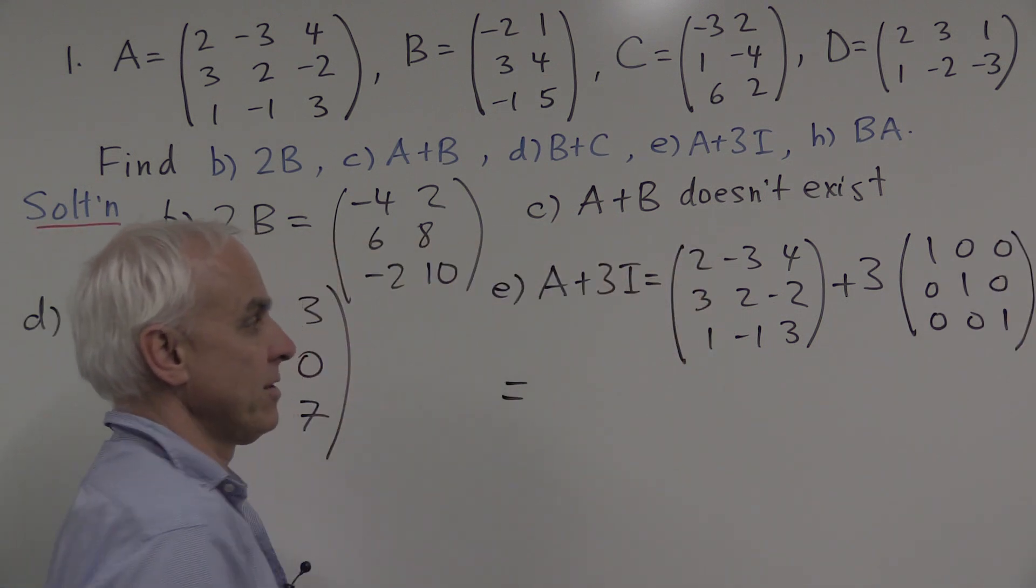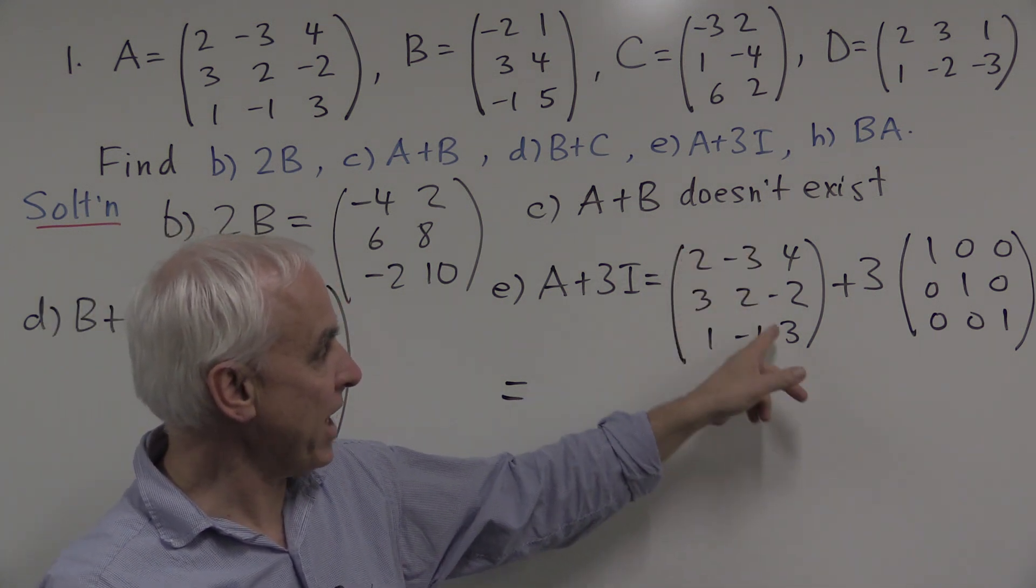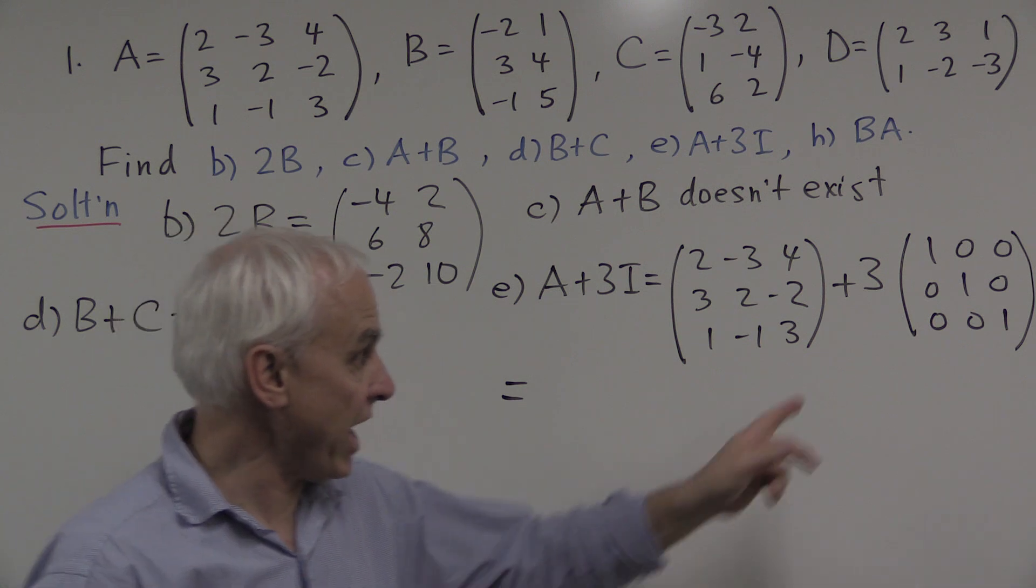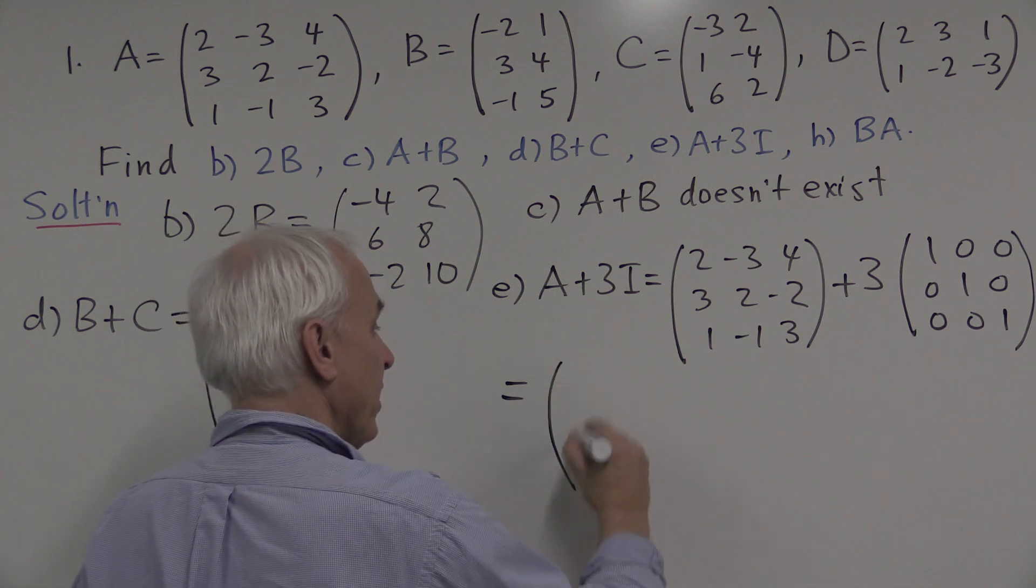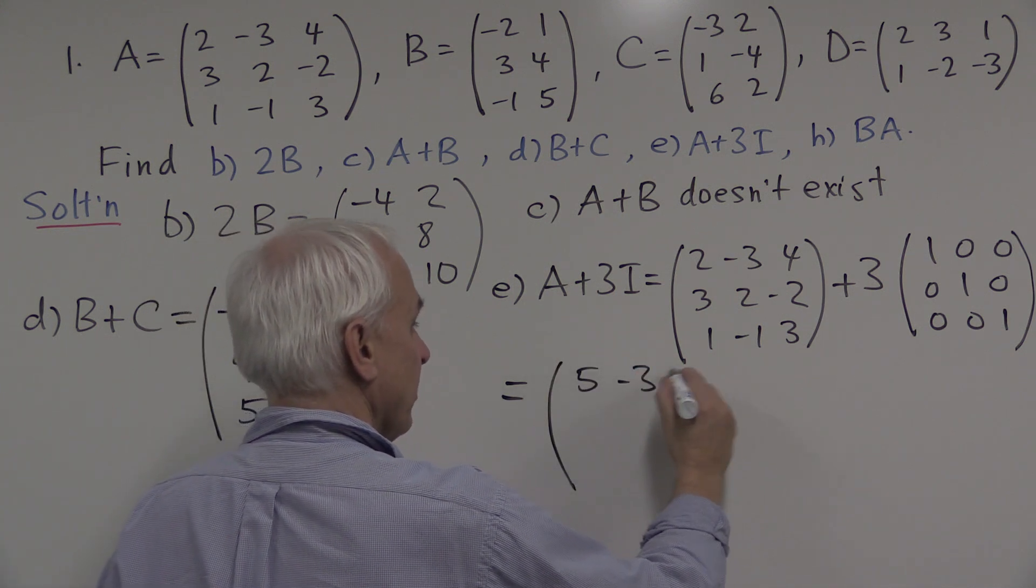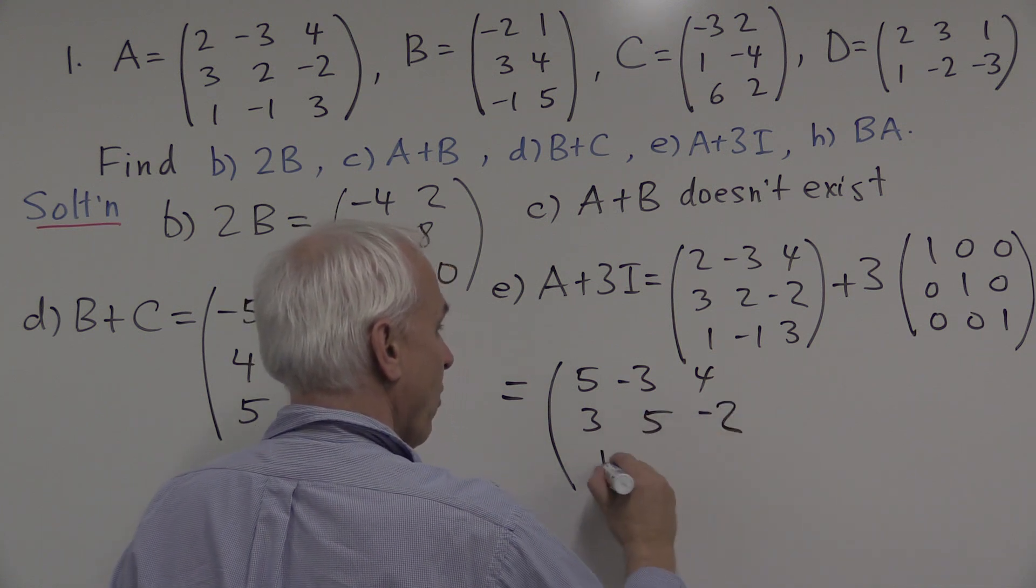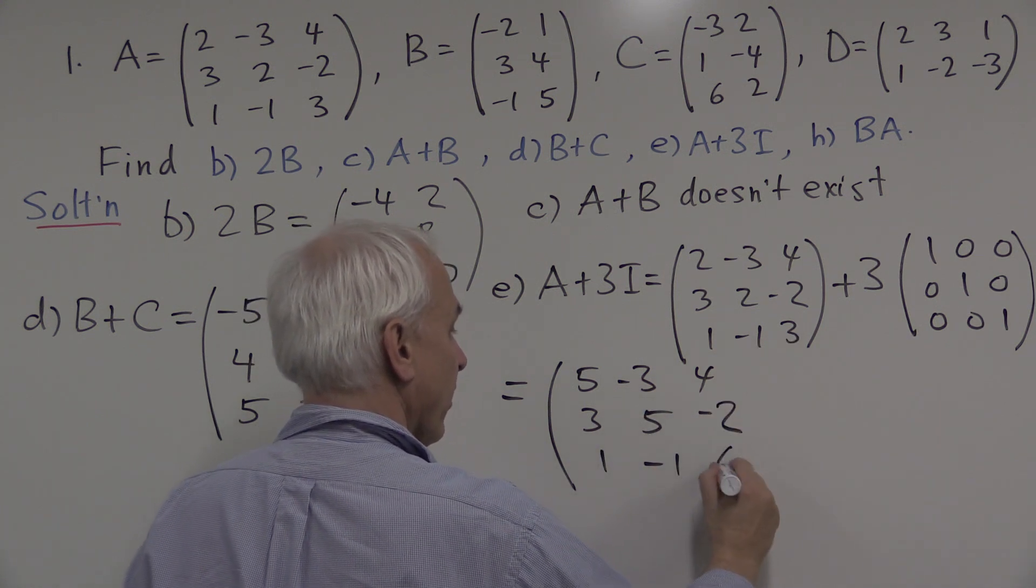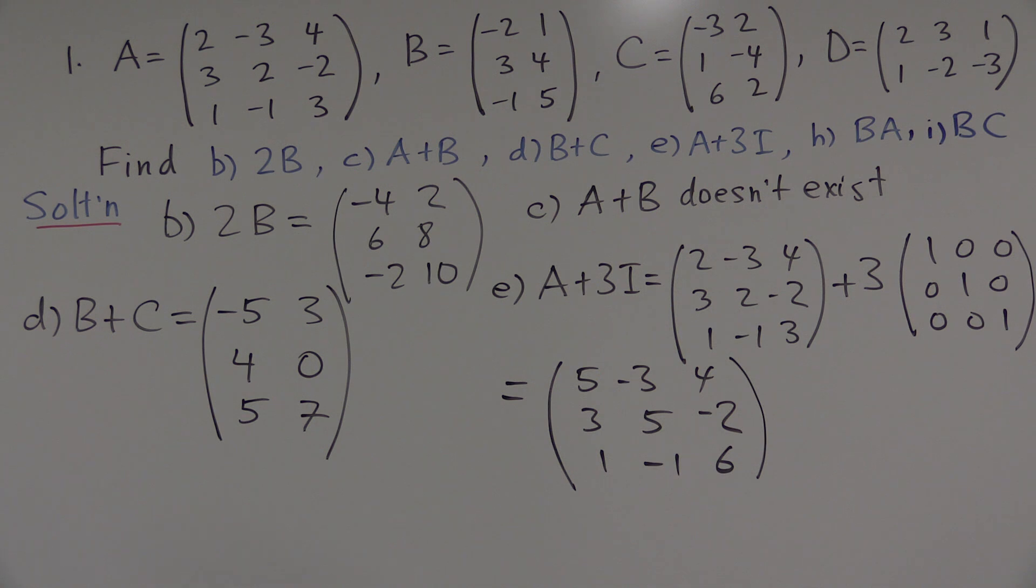So to add those, well, we're just going to take this matrix and along the diagonal, things are going to change. We're going to add 3 times 1. In other words, 3 to each of the diagonal elements. Giving us 5 minus 3, 4, 3, 5 minus 2, 1 minus 1, and 6 down there.